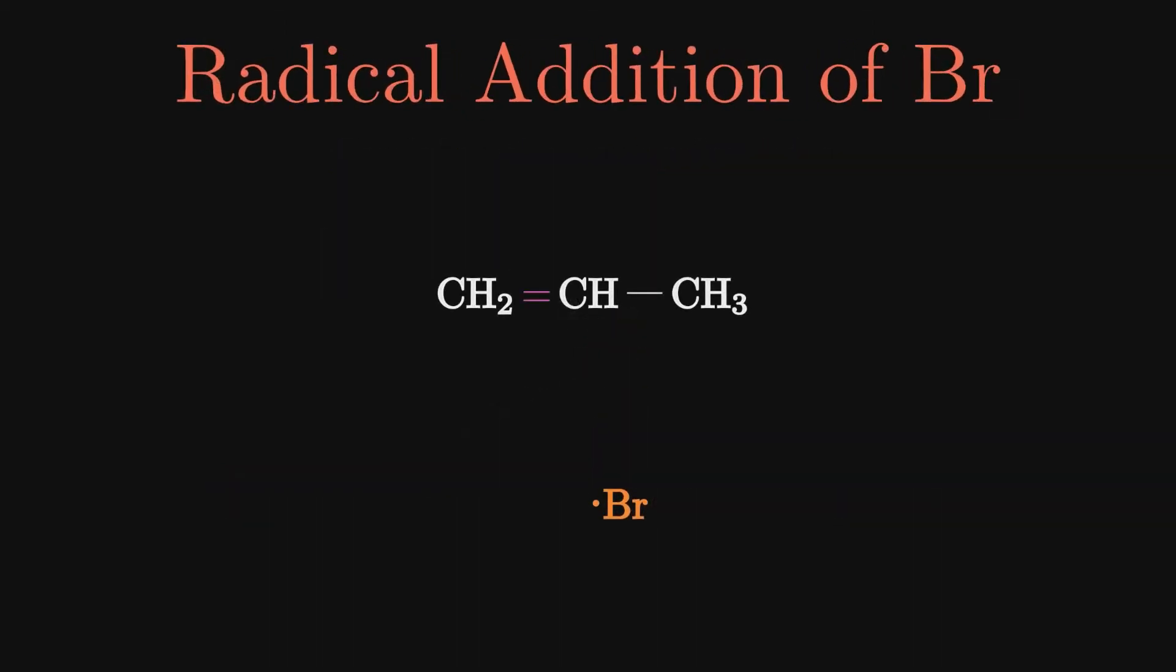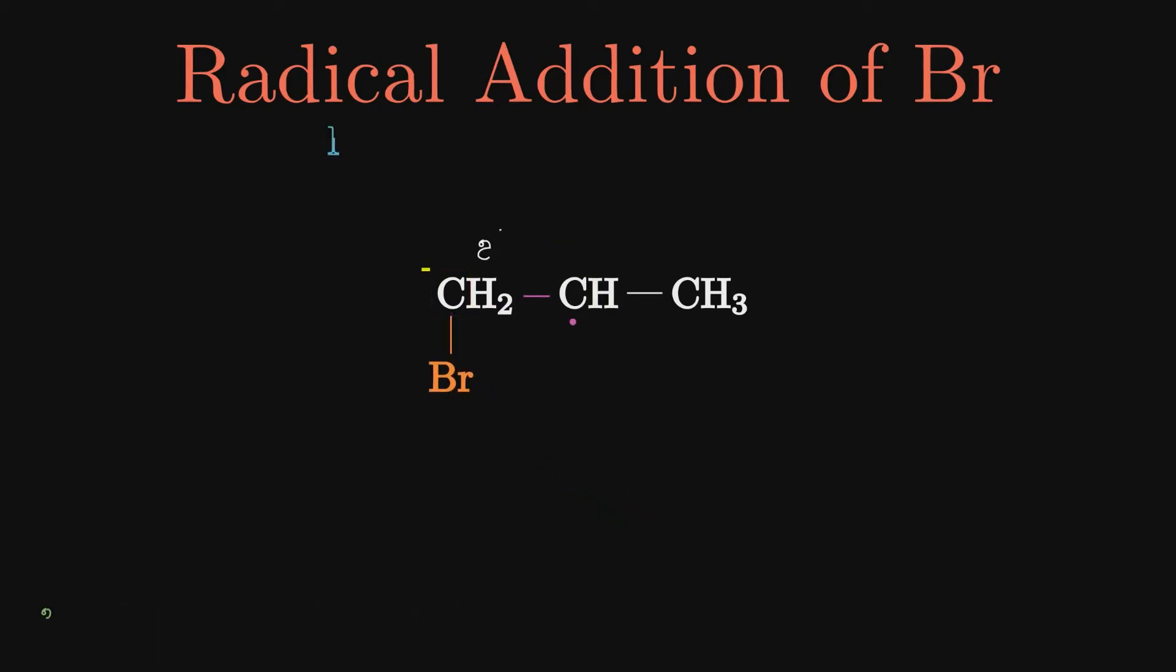As it approaches the alkene, the bromine radical treats the double bond similarly to how peroxide did HBr. It splits one of the two bonds evenly, takes one electron to form a bond with the less-substituted carbon, and the other carbon retains the remaining electron.